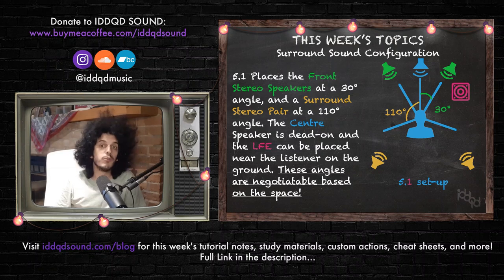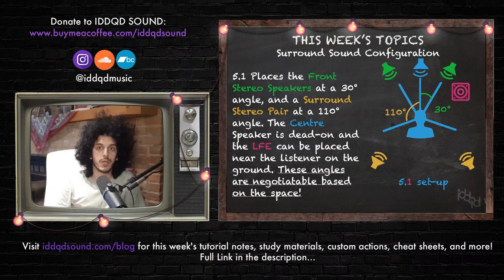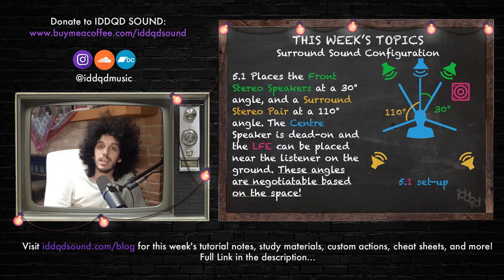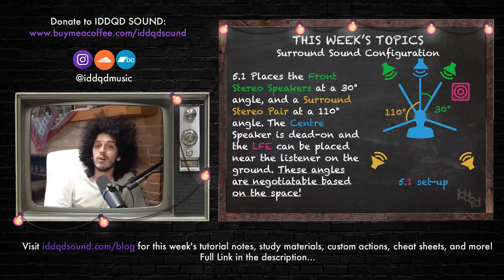I use the term output channels instead of saying speakers, just because this is not always a one-to-one relationship. At a concert venue, for example, you may have tens of speakers in the venue, but if they are taking in one of two output channels, then it's essentially stereo. So the number of output channels is what ultimately dictates the sonic image.